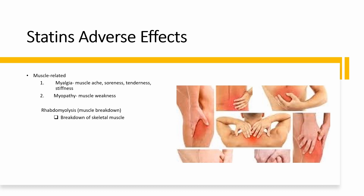Rhabdomyolysis involves breakdown of skeletal muscles. The symptoms are extreme muscle pain, weakness, and dark urine. It also causes elevation of creatinine kinase, which is an enzyme found in the muscle cell involved in muscle cell function. It also involves the protein myoglobin, which is found in your muscle cell. Due to muscle breakdown, this protein is released into the bloodstream and excreted in the urine, causing the urine to appear dark.